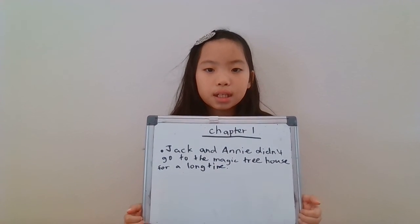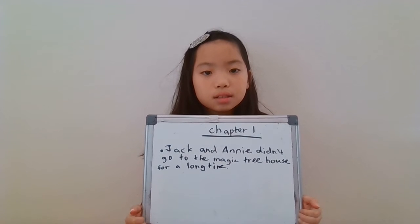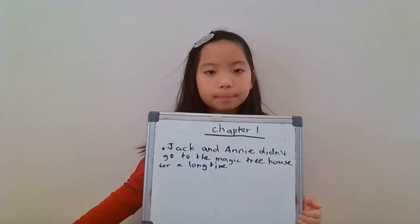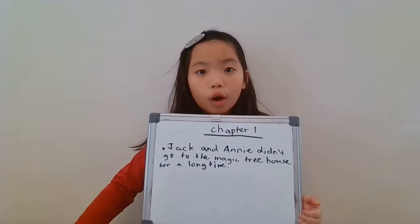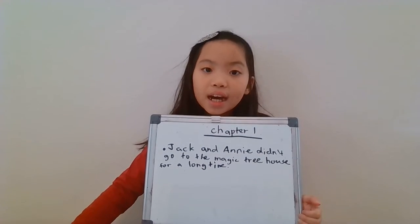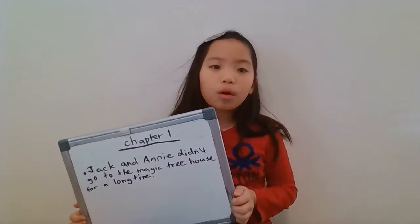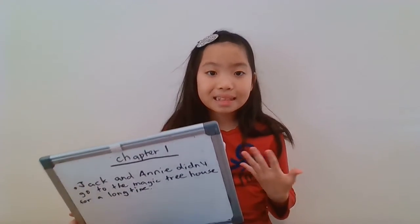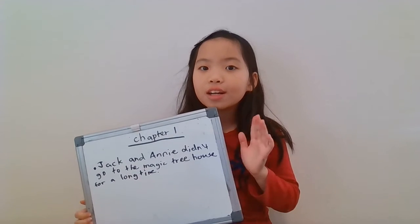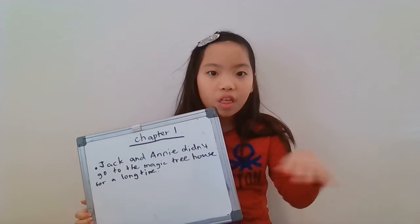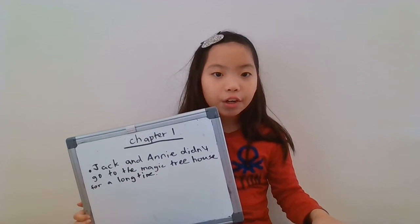The topic sentence is: Jack and Annie didn't go to the Magic Tree House for a long time because they were busy. That's good, but that's too short. You guys have to make it a long sentence because you guys are in third grade.